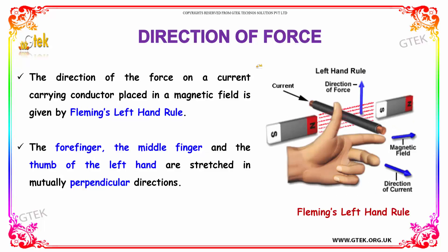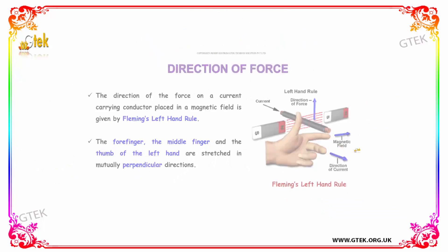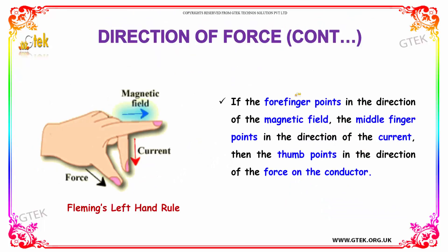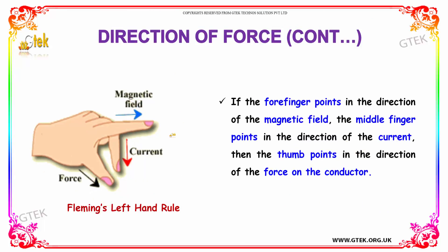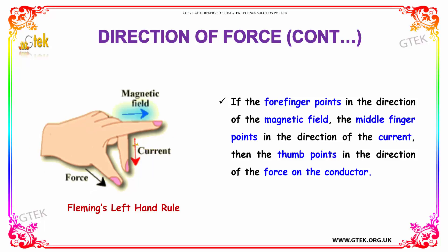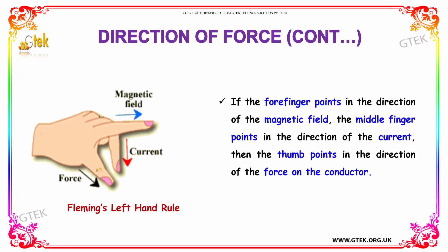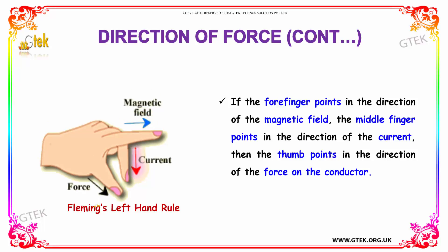If we talk about the direction of the force, the direction of the force on a current carrying conductor placed in a magnetic field is given by Fleming's left-hand rule. The four fingers point in the direction of the magnetic field, the middle finger points in the direction of the current, and the thumb points in the direction of the force. That is Fleming's left-hand rule.